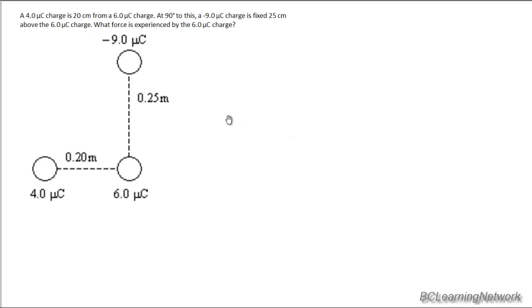This is a good example of a two-dimensional problem involving Coulomb's Law. And here we have charges arranged as follows. We've got two positive charges along the x-axis as shown. One's 4 microcoulombs, one's 6 microcoulombs.